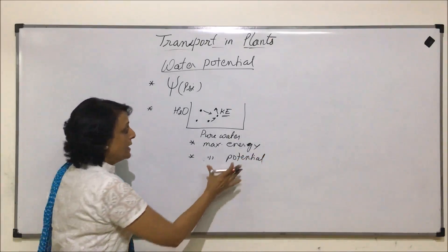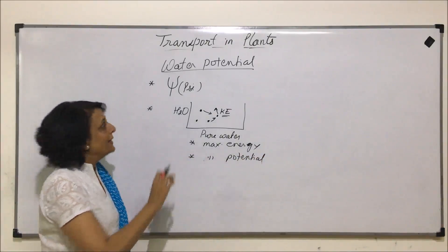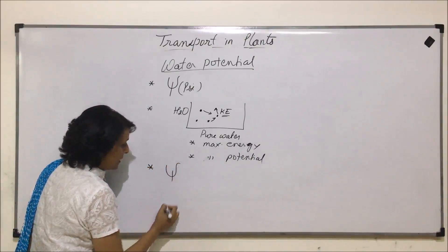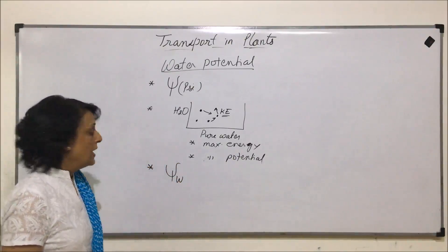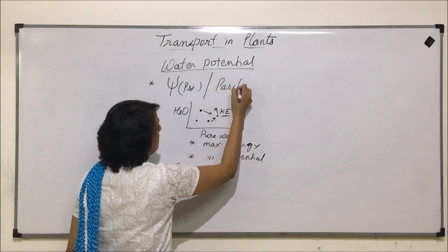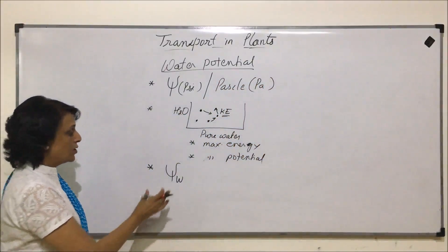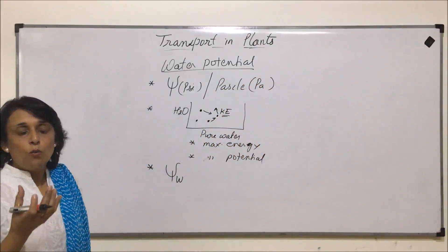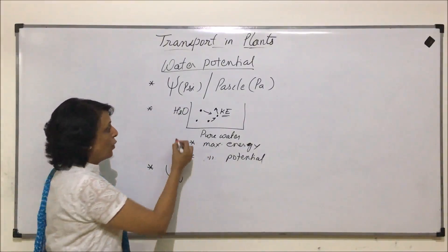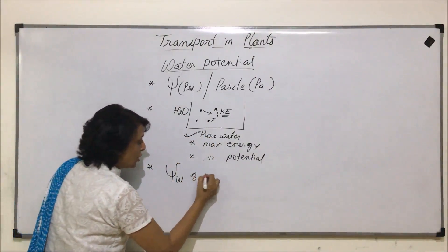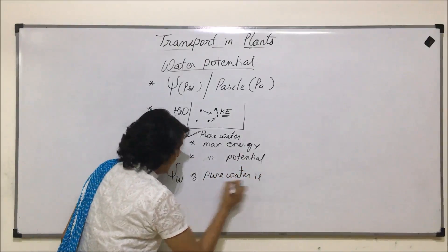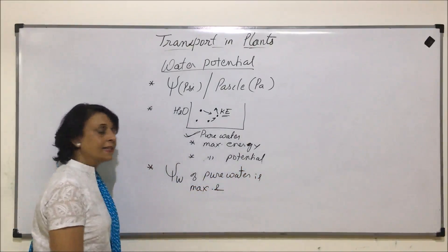When we talk of the potential of water molecules, we are talking of water potential. Water potential is represented by psi w, and the unit in which it is expressed is Pascal, written as Pa. So water potential is psi w. Pure water has maximum water potential, and the water potential of pure water is taken as zero.